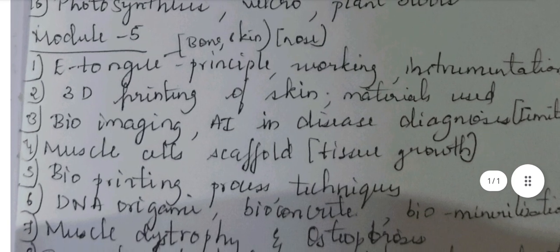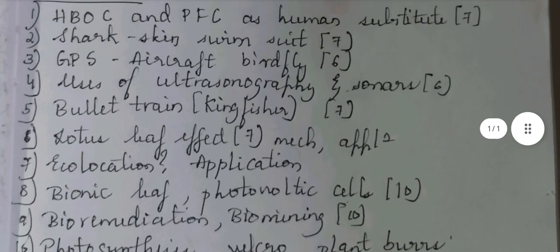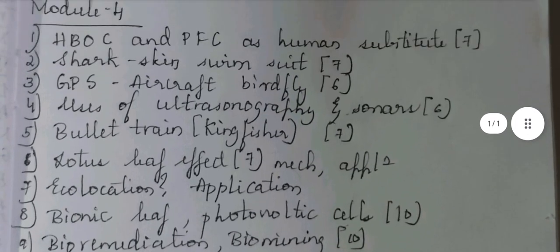In module 5 it's entirely about 3D printing and DNA origami. Before going to that, I would like to elaborate a few more points regarding module 4.